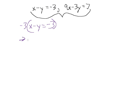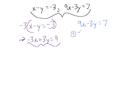Multiplying equation 1 by minus 3 gives us minus 3x plus 3y equals 9. Now we add this to 9x minus 3y equals 7. We're just manipulating one equation so we can use the elimination strategy, which in my opinion is much simpler than substitution. So 9x minus 3x is 6x, and 7 plus 9 is 16.